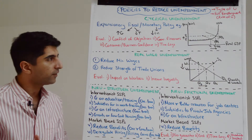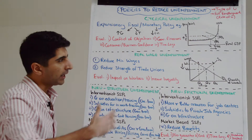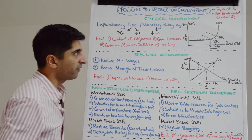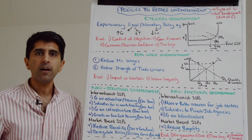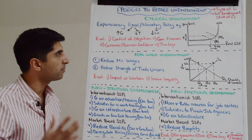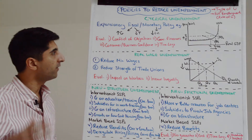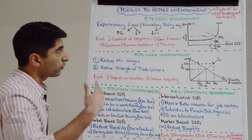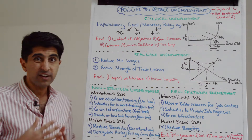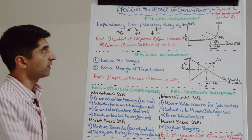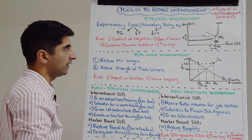But are there issues with using these policies? Let's evaluate them. There is a risk of a conflict of macro objectives — we might be able to increase growth and bring cyclical unemployment down, but there could be demand-pull inflation that overshoots the target. Also, if growth increases and incomes are rising, that could worsen a current account deficit through more spending on imports. Expansionary fiscal policy could worsen government finances. Many of these policies rely on strong consumer and business confidence, but in a recession confidence is likely to be low, limiting their effectiveness. And there are time lags associated with these policies as well.